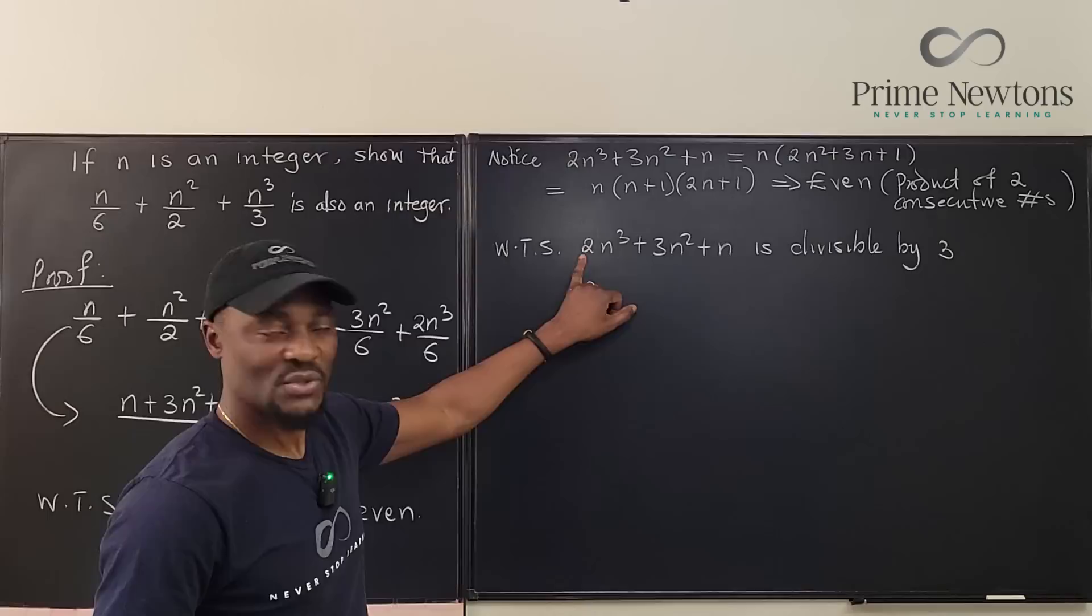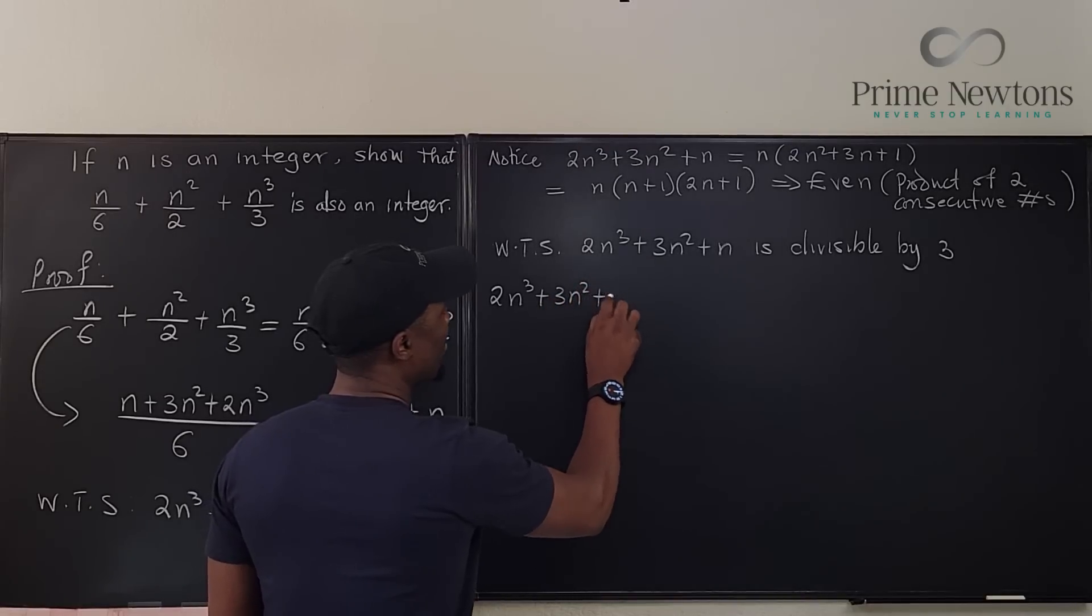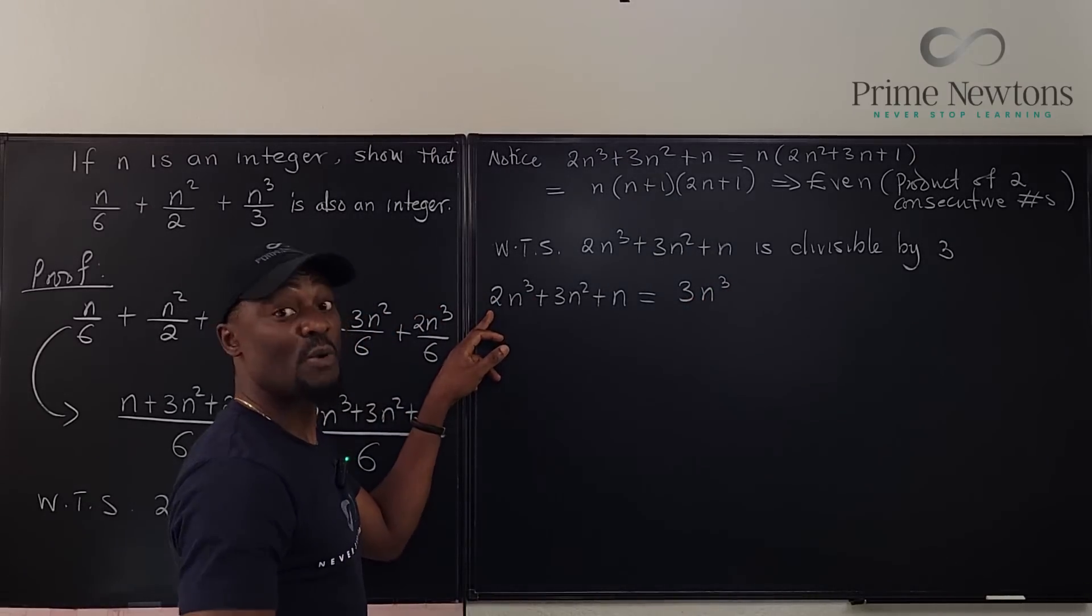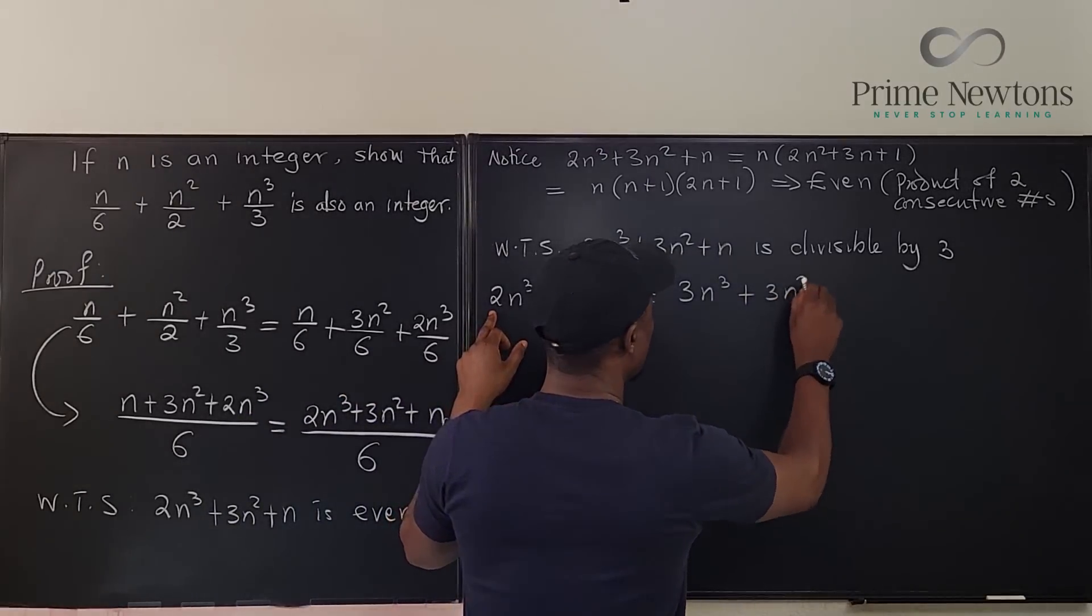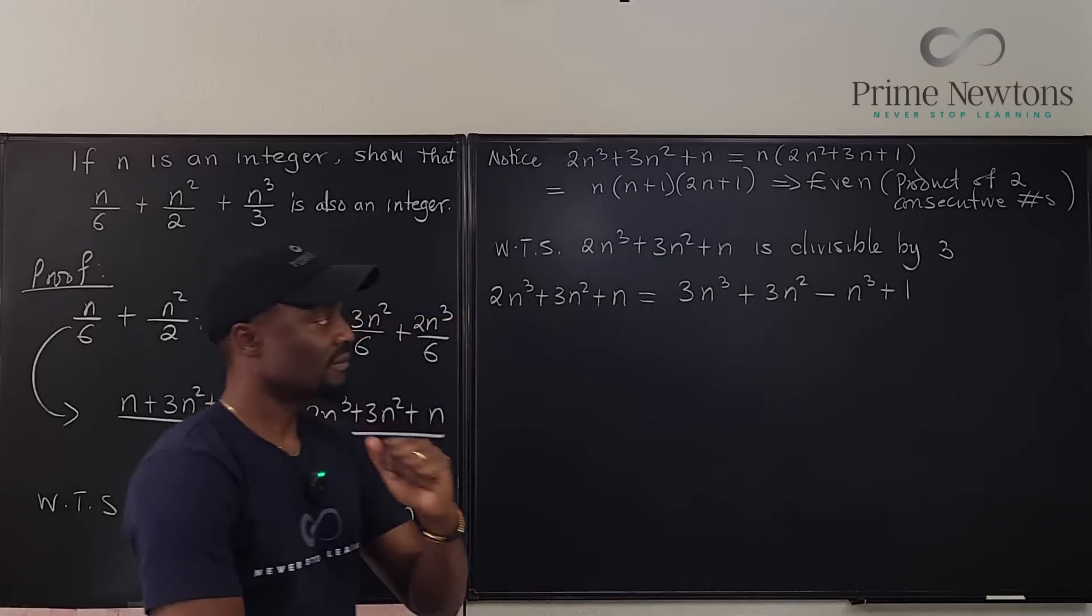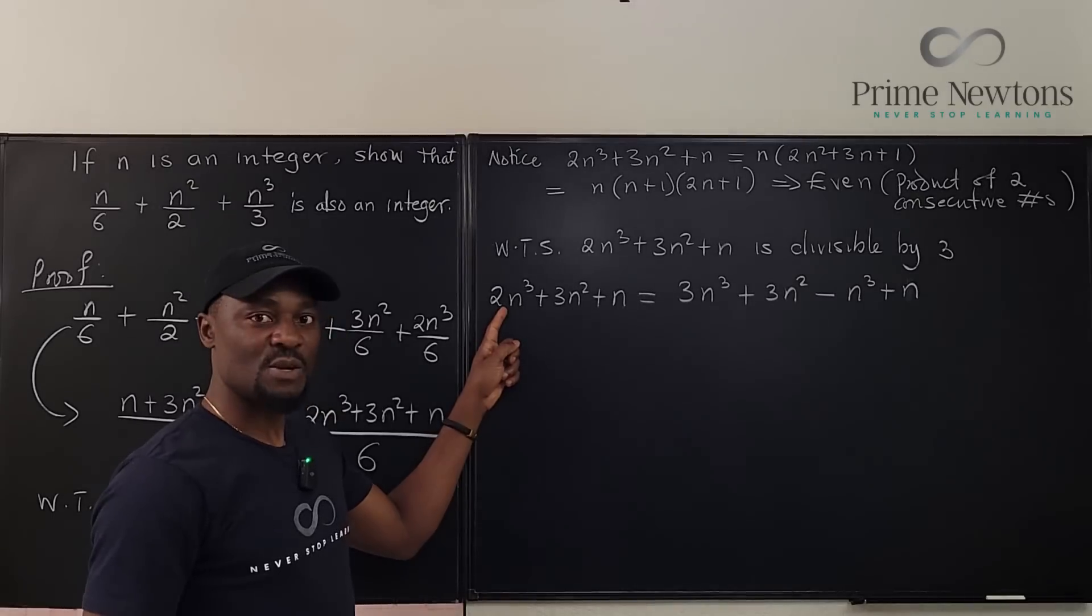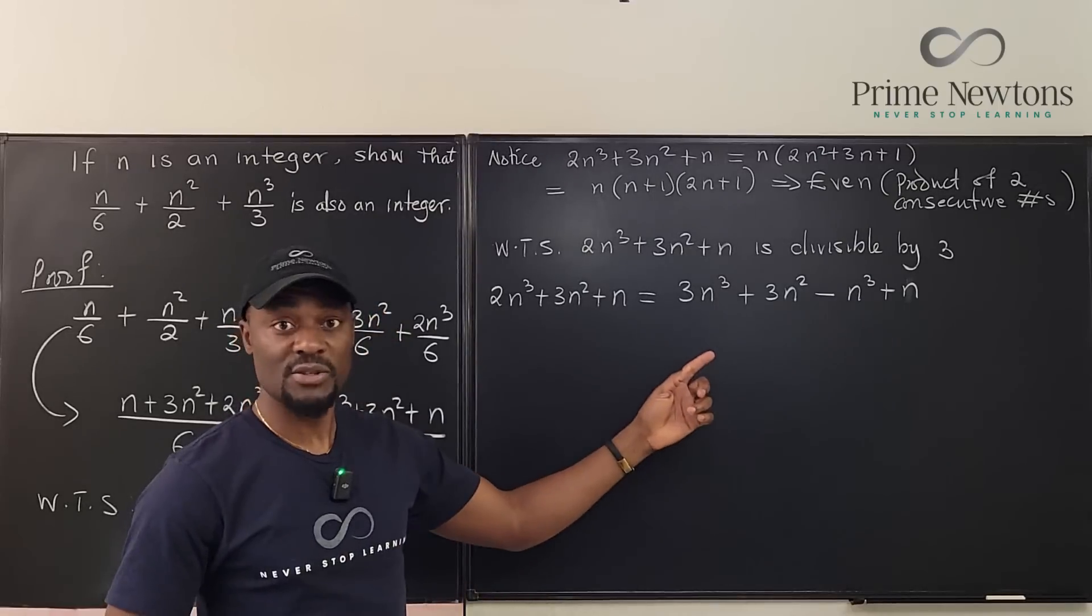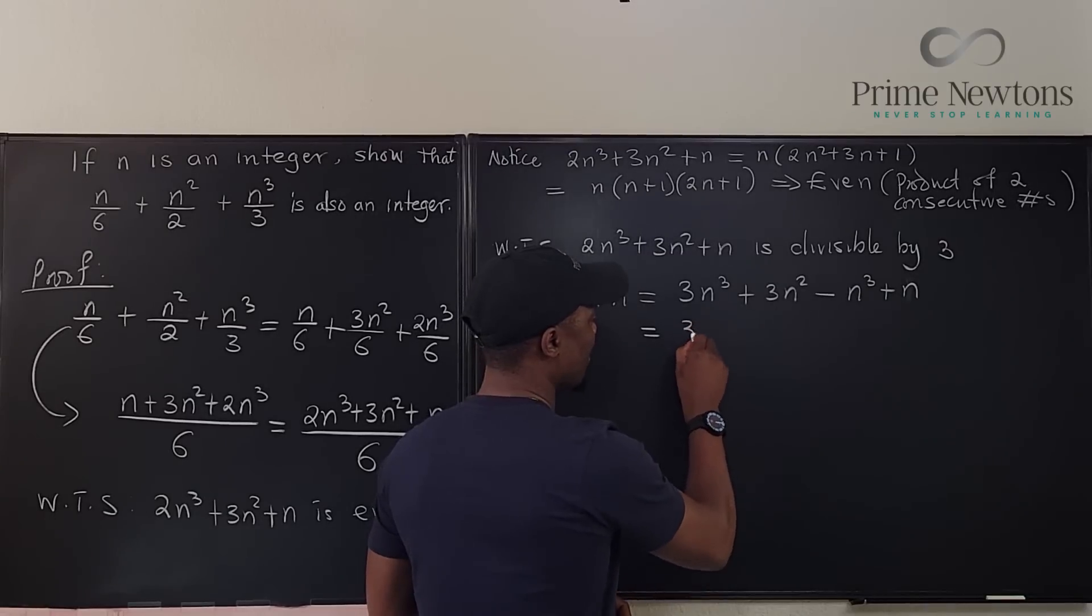We're going to say 2n cubed plus 3n squared plus n will be the same thing as 3n cubed minus 1n cubed plus 3n squared then minus n cubed plus n. What I just did was I added n cubed to this but I'm subtracting it again, so I haven't changed the total of the expression.